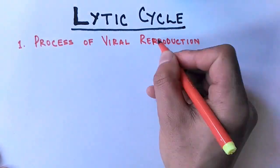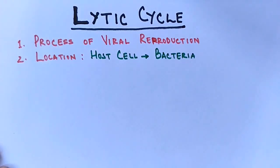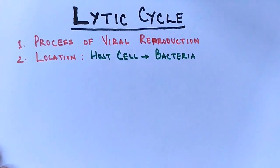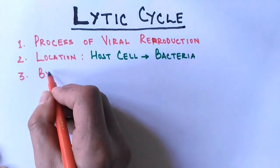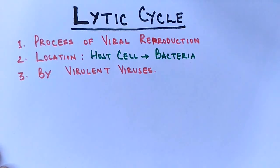First thing we note here, it is a process of viral reproduction. Second, it occurs in a host cell which we know is bacteria here. Third most important point to be noted is this cycle is driven only by virulent viruses. What I mean to say is that viruses which reproduce via lytic cycle are called virulent viruses, and other viruses which make use of lysogenic cycle are called temperate viruses. They have different mechanisms while reproducing in a host cell.